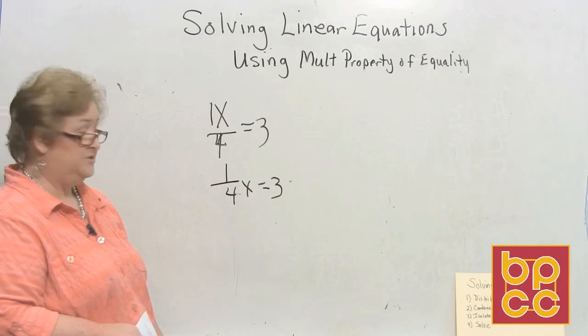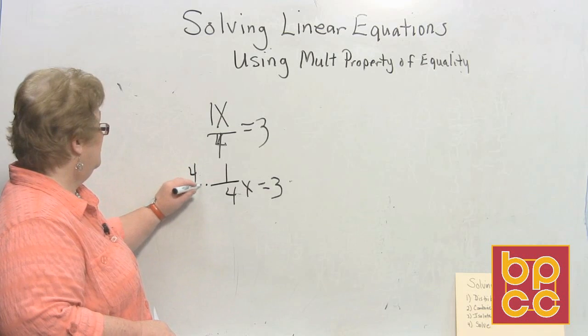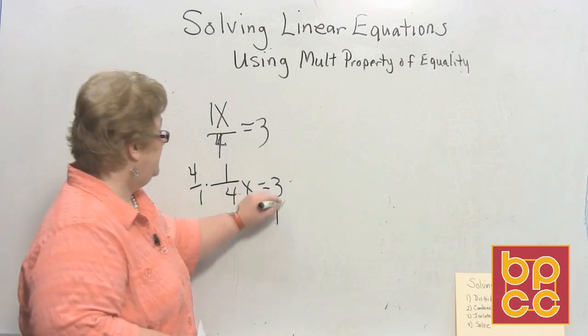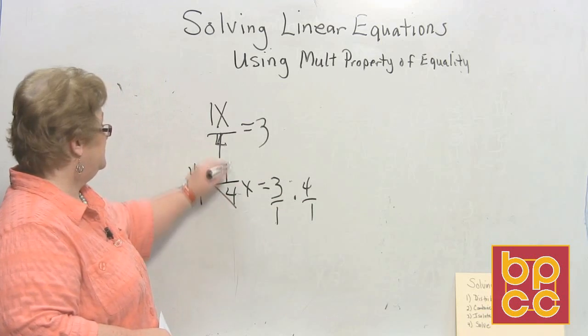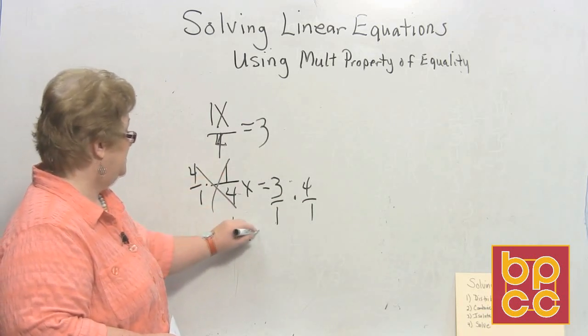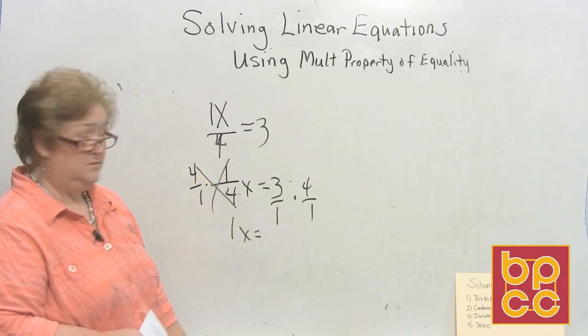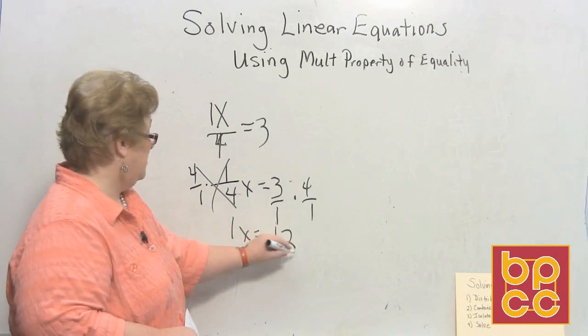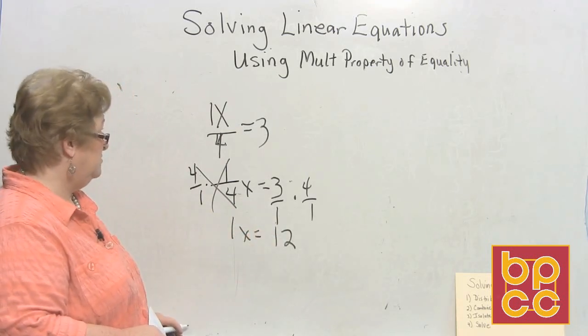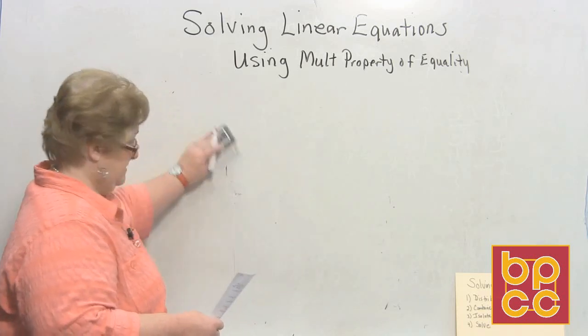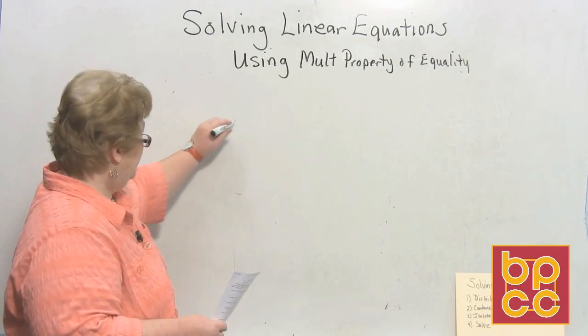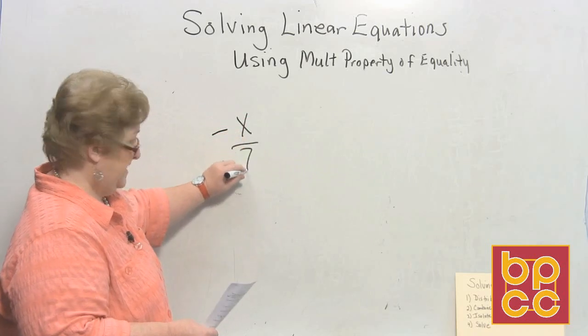Now I'm ready to multiply by the reciprocal, which is a 4 over 1. And over here, I will multiply by 4 over 1. This clears out to a positive 1x, and 3 times 4 is equal to 12. 1x or x equal 12.